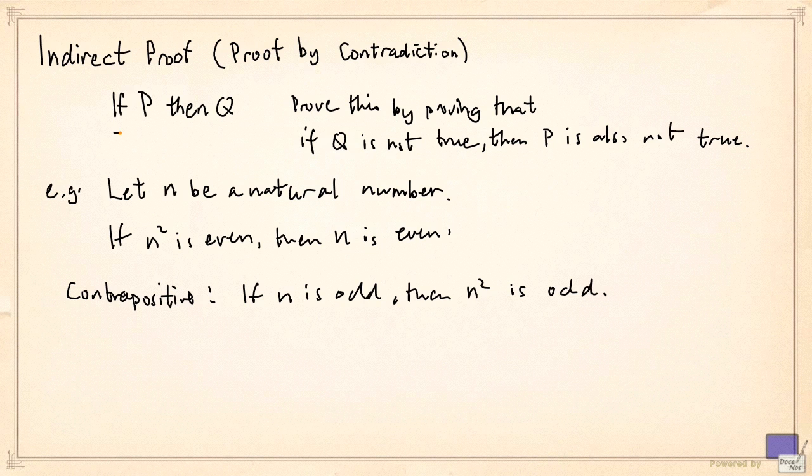Note that our statement, if P then Q, is false precisely when P is true and Q is false. So if we establish that Q is false forces P to be false as well, we can't fall into the situation when P is true and Q is false. We cannot have if P then Q being false, so it must be true.